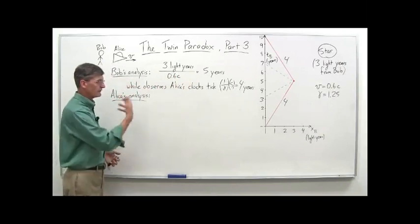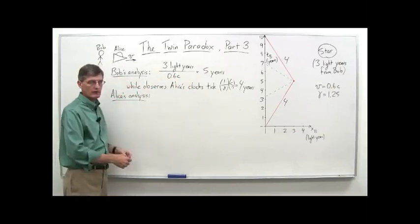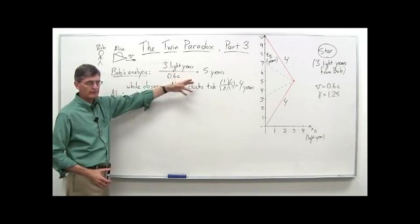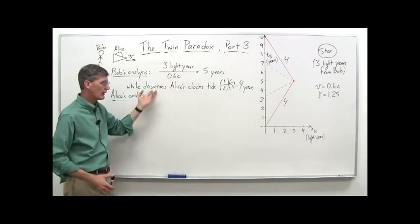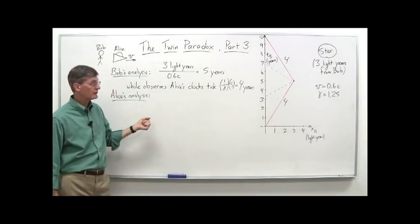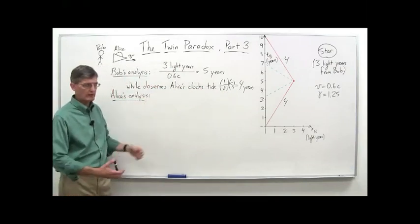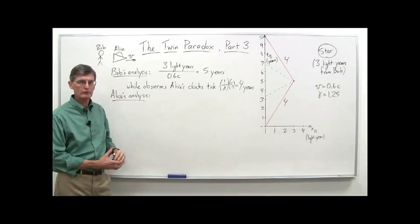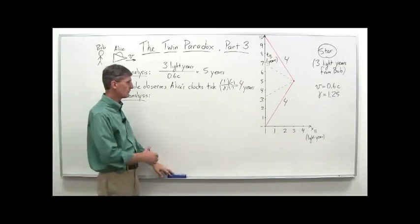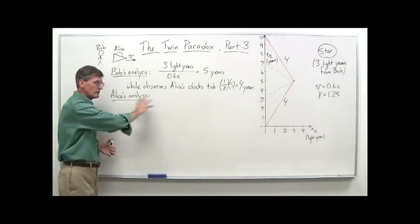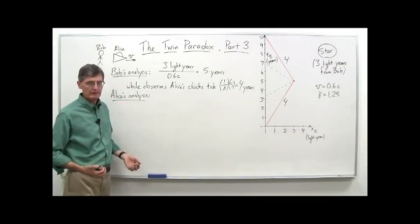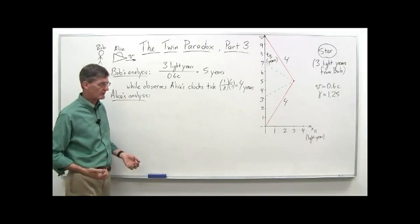Then she turns around and comes right back again. He sees the same thing happen on the inbound trip - she covers three light years, takes five years at 0.6c, her clocks tick off another four years, his clocks tick off five years. When she gets back he says, you're only eight years older than when you left, and I've aged 10 years. So just using the concept of time dilation, it makes sense that Alice would be younger. The hard part is what about Alice's analysis - what does she think?